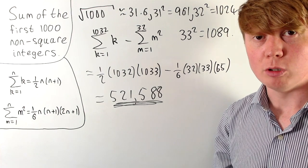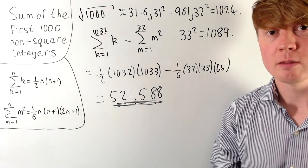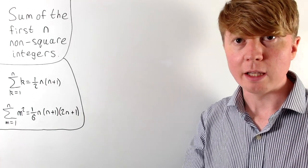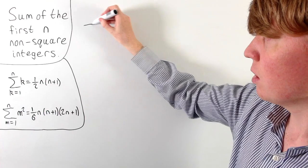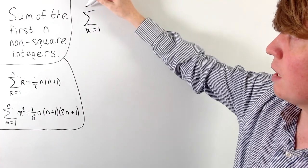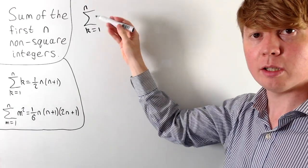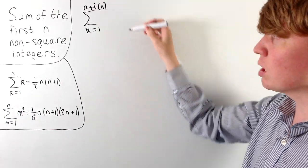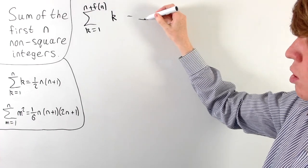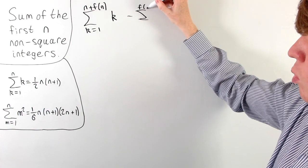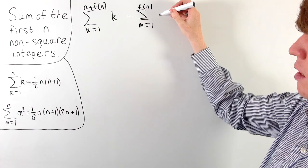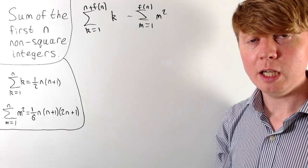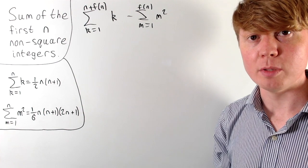Now we look at the more general problem of the sum of the first n non-square integers. Just like before, we take the sum of all integers up to a certain point, then subtract the square numbers we don't want. The difficult part is knowing exactly when to stop. We take the sum from k = 1 up to n plus some extra number — the number of square numbers we need to disregard — which we call f(n). Then we subtract the sum from m = 1 up to f(n) of m². The problem reduces to finding this function f(n).